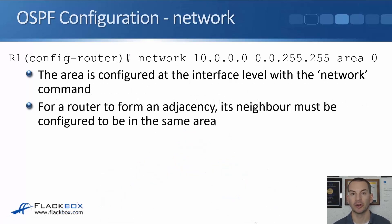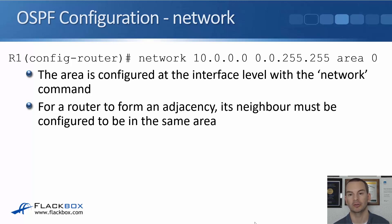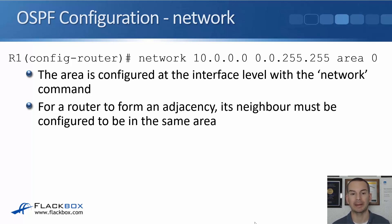The area is configured at the interface level with the network command. For example: network 10.0.0.0 with wildcard mask 0.0.255.255 area zero. So any interfaces on this router which have an IP address that falls within that range will be enabled for OSPF and put in area zero. For a router to form an adjacency, its neighbor on the other side of the link must be configured to be in the same area. If you've got an area mismatch, the adjacency isn't going to come up and the routers will not share routes with each other.